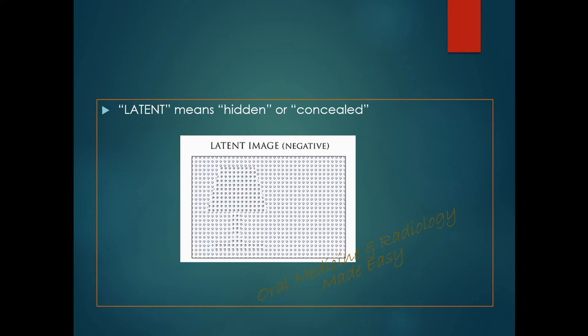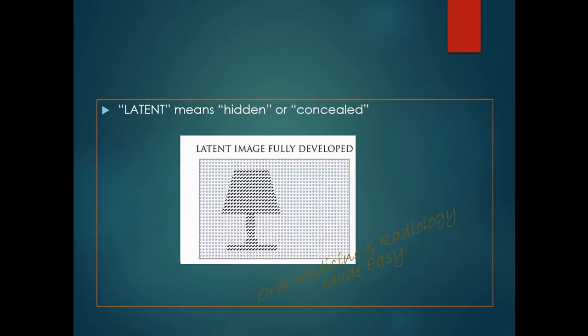This latent image becomes a visible image only after processing. So the latent image is a negative or hidden image — hardly visible before processing, but after processing you can clearly see the image. In summary, the latent image is the hidden image present in the exposed x-ray film.